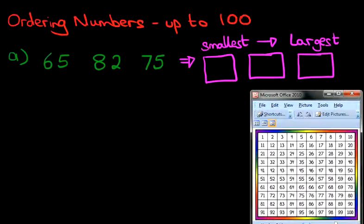Which number is the smallest just by the row that you're on? Is it 65? Is it 82? Or 75?